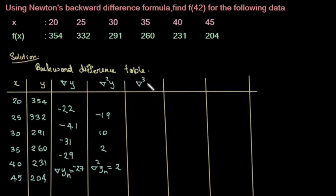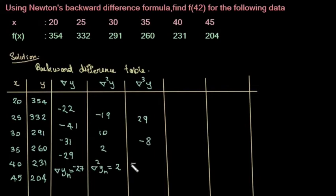Next, ∇³y. So, 10 minus minus 19 is 29. This is minus 8, and here ∇³yₙ equal to 2.